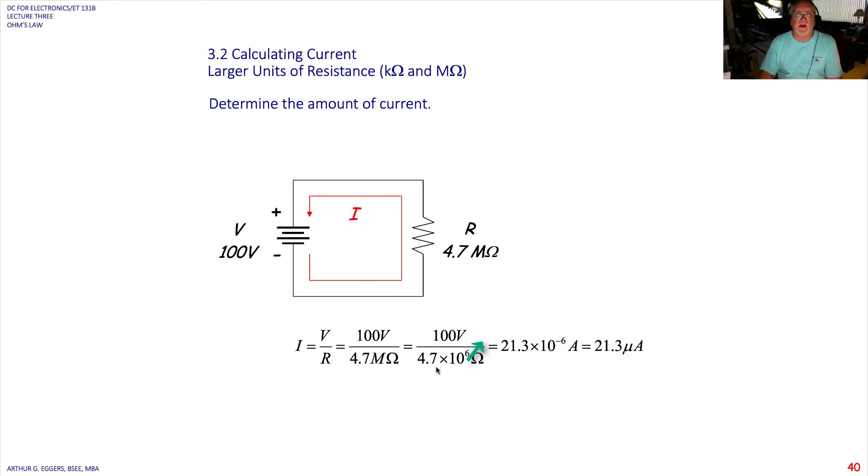100 divided by 4.7 meg. So now we're going to divide 4.7 times 10 to the sixth into 100. Move 10 to the sixth into the numerator. Divide 4.7 into 100. We get 21.3. So we have 21.3 micro amps of current.